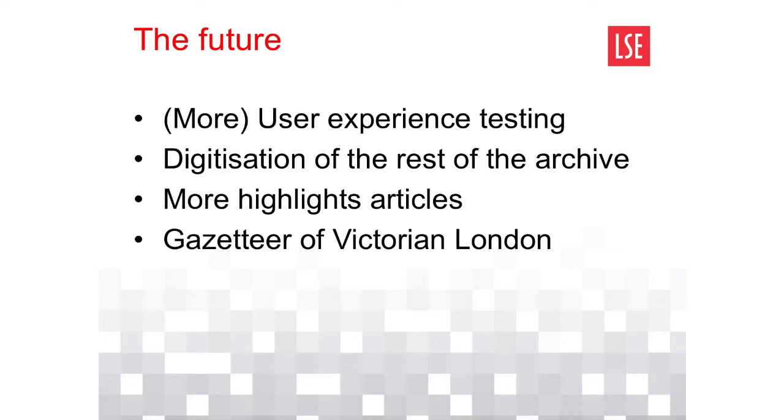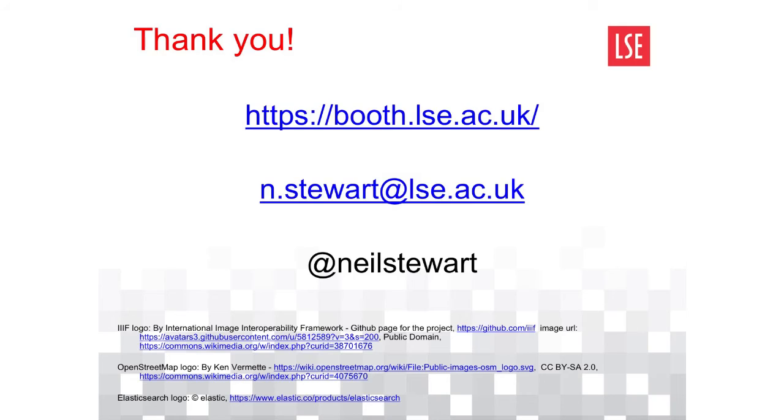The one I'd like to pick out is this idea of a gazetteer of Victorian London. We didn't have the ability to search the map of Victorian London with the original application. Interestingly, some 50% of streets from that time have disappeared, been renamed, or merged into other streets. So we want to address that by creating a gazetteer of Victorian London — and shout out to the GB1900 project who are helping us do that. There's the URL once again — booth.lse.ac.uk. Thank you very much.